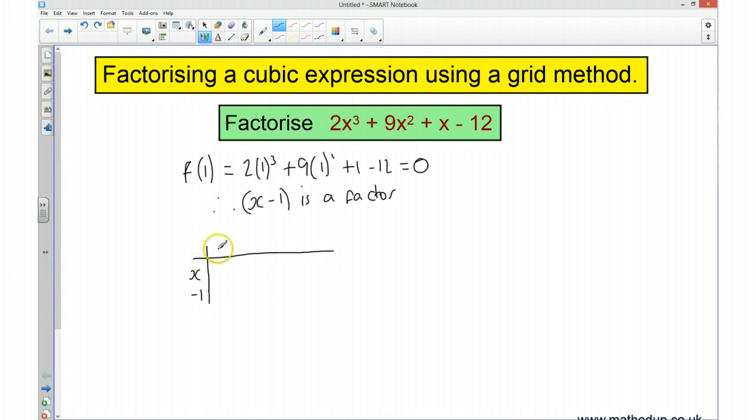So x times something is going to give me 2x cubed. So that there must be 2x squared. Okay, so that means I have to do this times 2x squared, which gives me negative 2x squared. And I need something that's going to make it add to 9x squared.